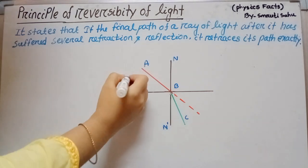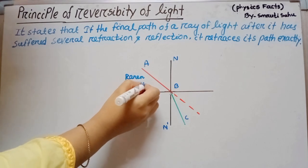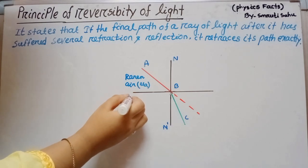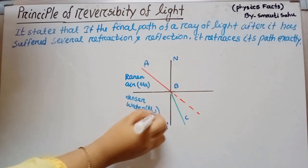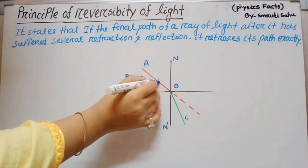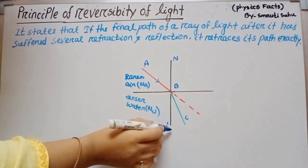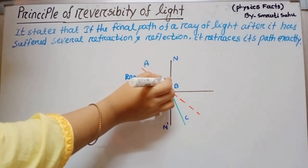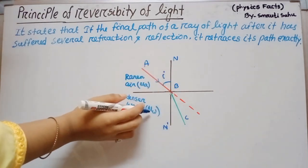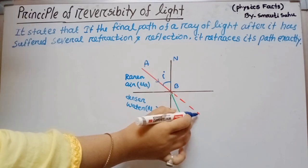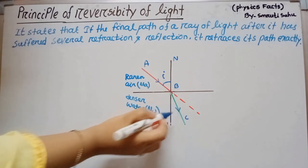The first medium is the rarer medium — for example, air — with refractive index μ_A. The second medium is the denser medium — for example, water — with refractive index μ_W. An incident ray AP passes from the rarer medium to the denser medium. At the point of incidence, draw normal NN'. This angle is the angle of incidence, taken as I. The ray deviates from its actual path and bends towards the normal. So BC is the refracted ray.